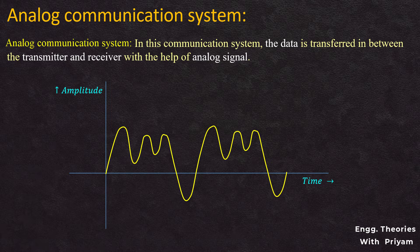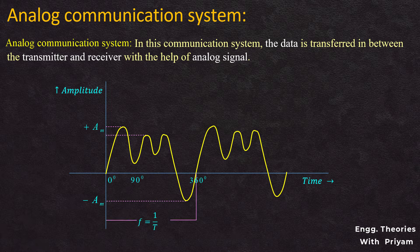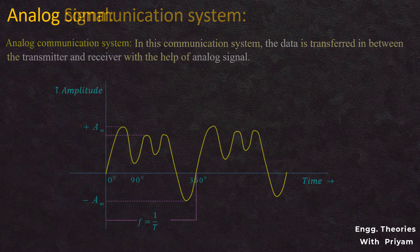An analog signal is a continuous signal. The value of the analog signal varies continuously with time, and the value range of the analog signal cannot be fixed. The behavior of an analog signal can be described with the help of three parameters: amplitude, phase, and frequency.